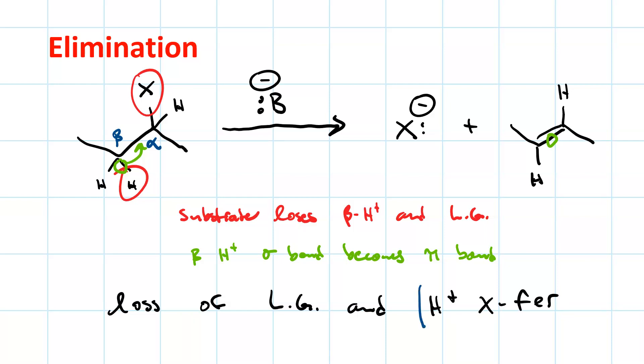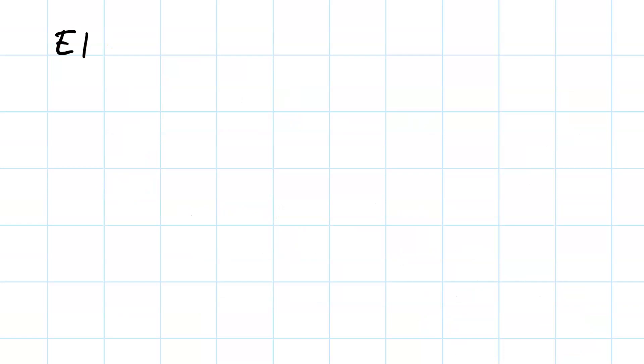It's the proton transfer that requires the base as the reagent. Moreover, these two steps can occur sequentially or concerted. The E1 mechanism is sequential. Step one is loss of a leaving group.